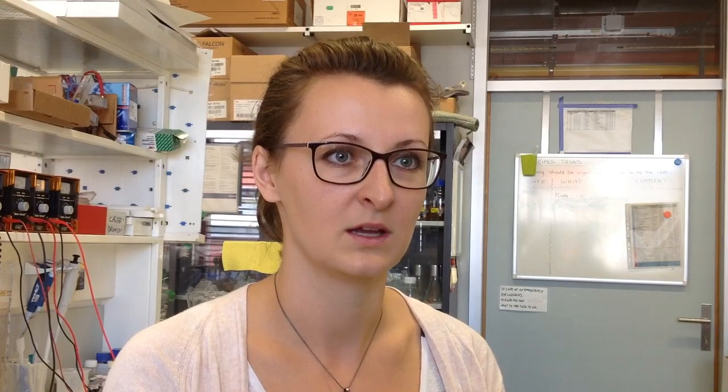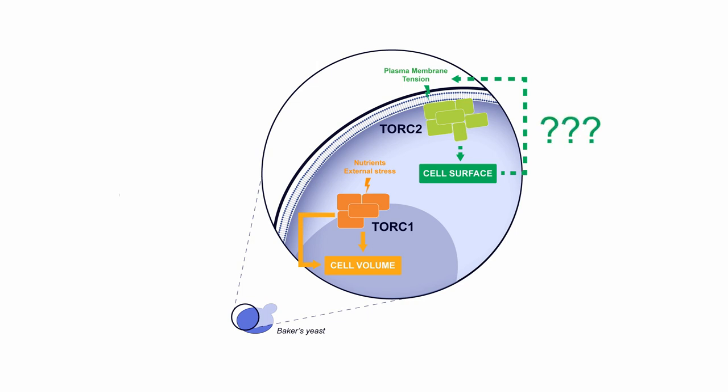We already know that there are two protein complexes that control cell growth: TOR complex 1 and TOR complex 2. TOR complex 1 controls cell volume, and TOR complex 2 sits directly at the plasma membrane, making it a very good candidate for the regulation of membrane tension.